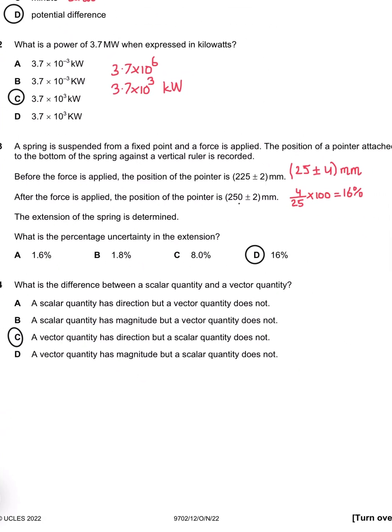Question 3: There are two pointers of position and the extension. What is the percentage uncertainty in the extension? Subtracting two values gives us 250 minus 225 equals 25, and the uncertainties add up so they become 4. The percentage uncertainty is 4 over 25, which becomes 16 percent. So D is the appropriate answer.